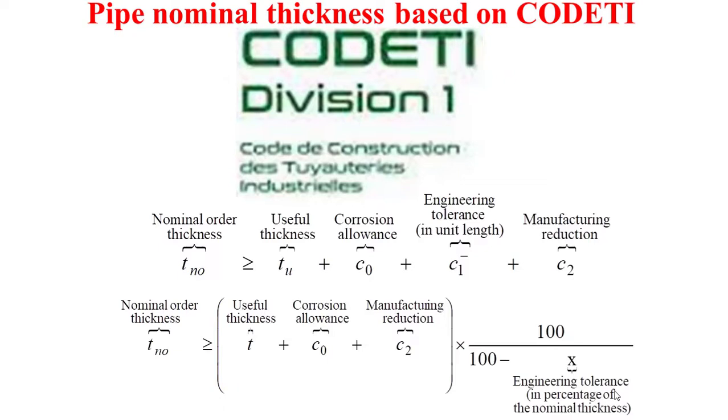It's to note also that the corrosion allowance is set by the customer or based on an agreement between the customer and the designer. This agreement is based on the nature of the product in contact with the pipe wall, the temperature, the velocity, etc.